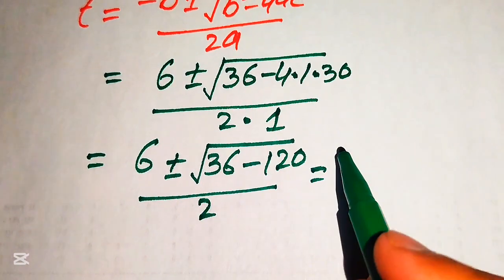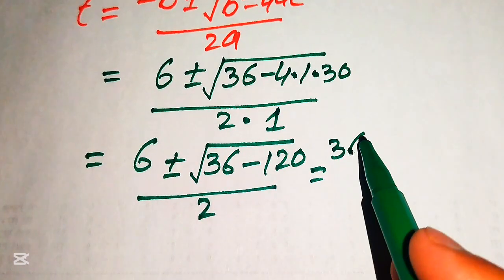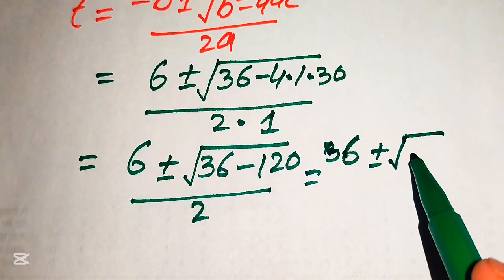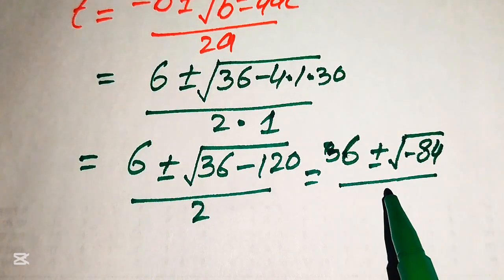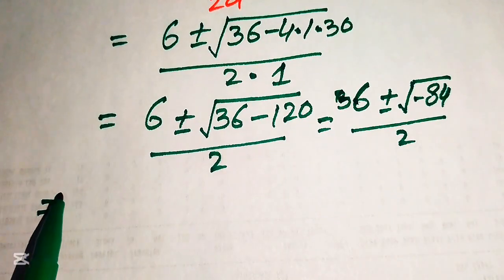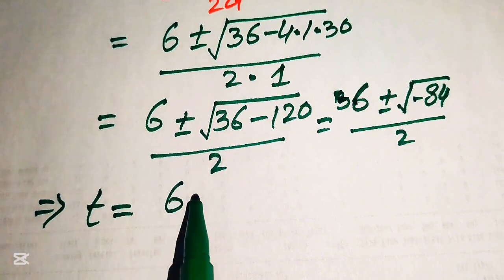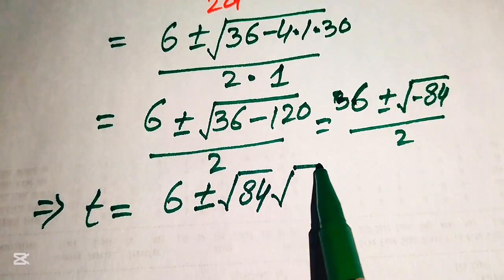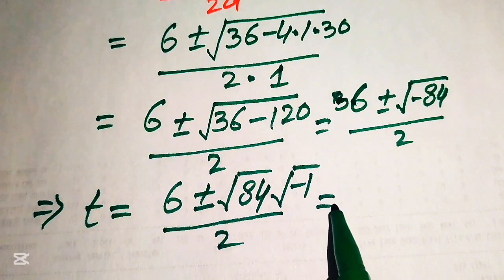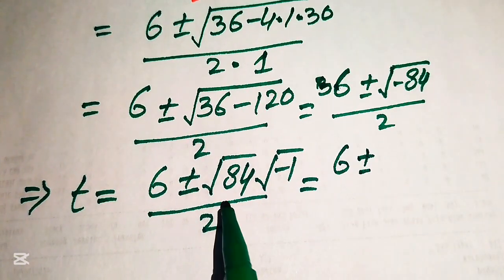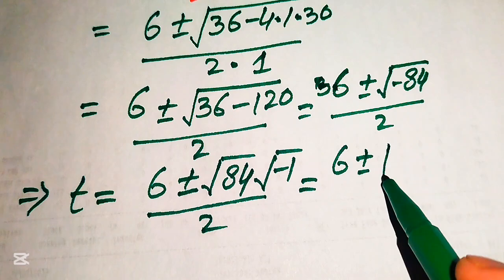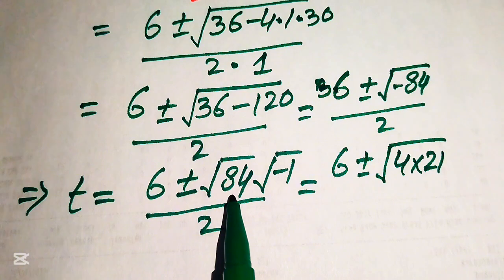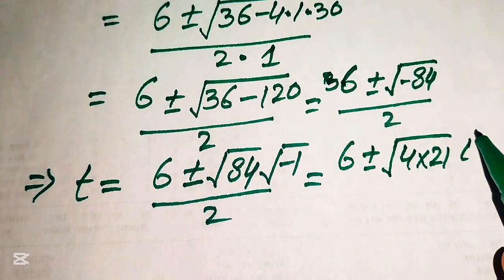Subtracting gives 36 minus 120 equals minus 84, divided by 2. We separate the square root: the square root of minus 84 becomes the square root of 4 times 21 times the square root of minus 1. Since the square root of minus 1 equals iota (i), this becomes 2 times the square root of 21 times i, divided by 2.